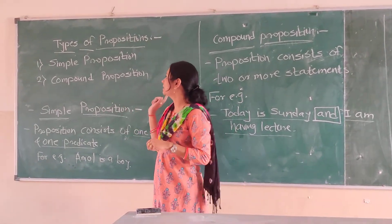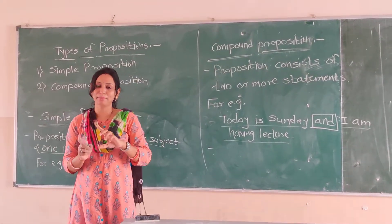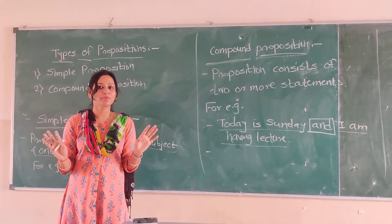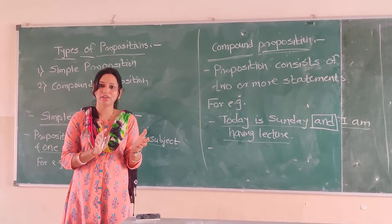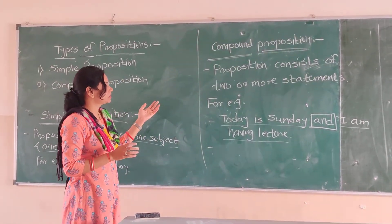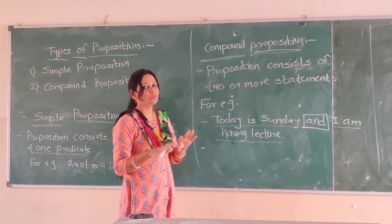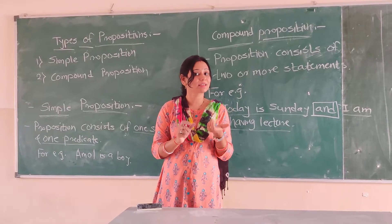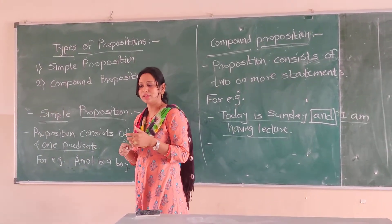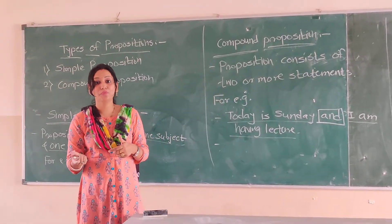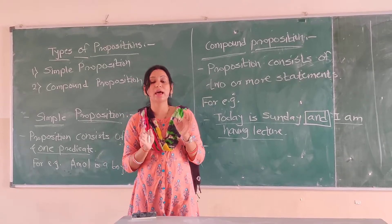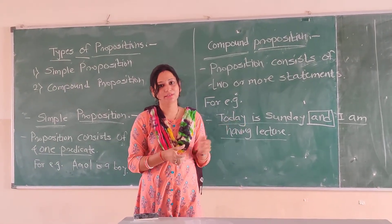These are the basic two types of propositions — simple and compound. A simple proposition is a normal proposition without any connective, and a compound proposition is a collection of two or more propositions connected by connective words. In the next section, we will see truth tables and the connective words used for these propositions. Thank you.